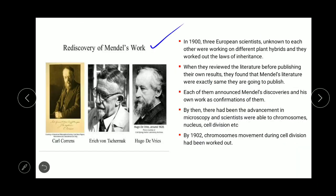Regarding the rediscovery of Mendel's work — in around 1900, three European scientists: Carl Correns, Erich von Tschermak, and Hugo de Vries, who were unknown to each other, were independently working on plant hybrids. They each worked out laws of inheritance and derived laws regarding inheritance patterns.